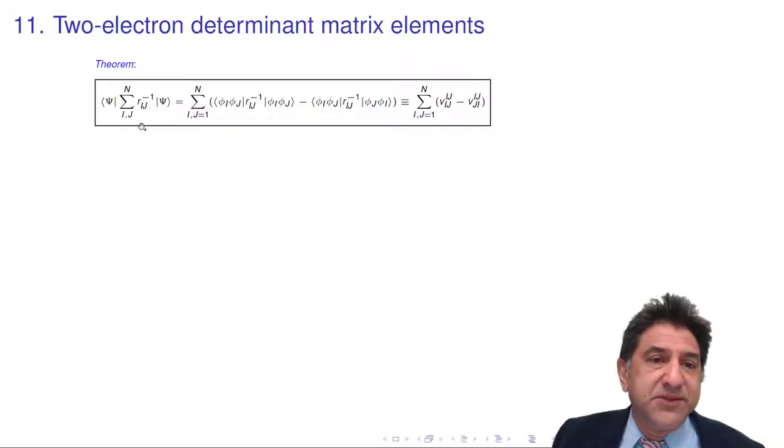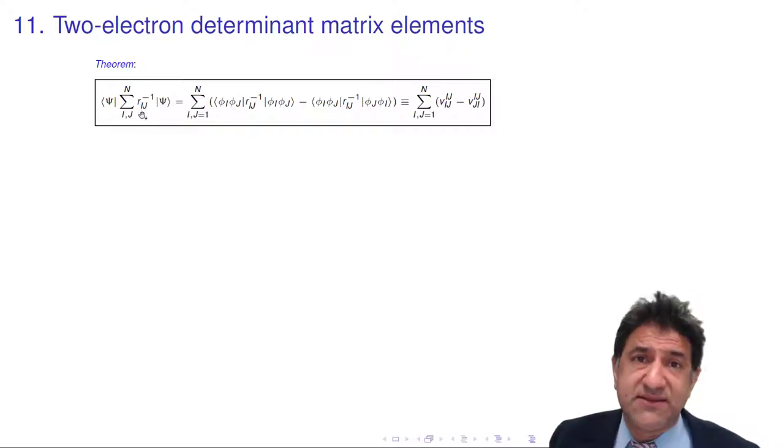Now, the two-electron operator in the Hamiltonian, there's only one of them, and in atomic units, it's the reciprocal of the distance between two electrons. Obviously, this involves the coordinates of the first and second electron. So it involves two electrons, and we have to sum over all pairs of repulsions.